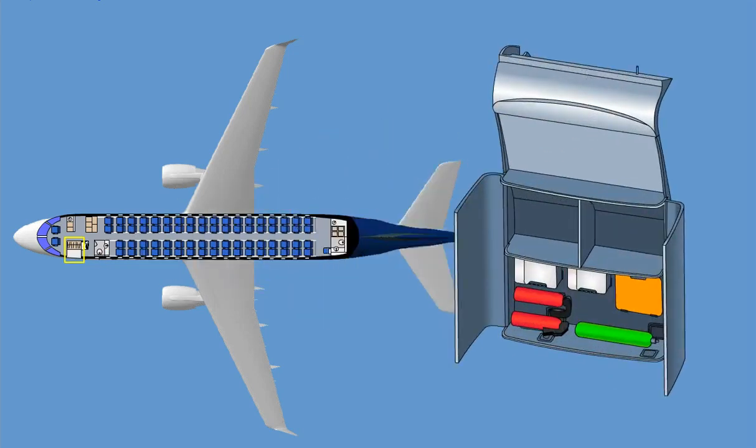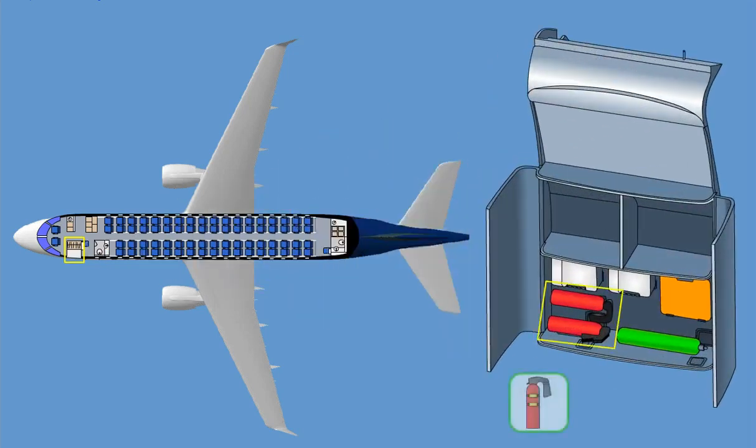The air stair stowage contains two fire extinguishers, a PBE, a portable oxygen bottle, an oxygen key, and a medical and first aid kit.